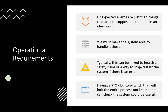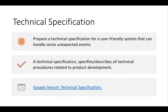Unexpected events are things that are not supposed to happen in an ideal world, but we must make the system able to handle them. Typically this can be linked to health and safety issues or a way to stop or restart the system if there is an error. For example, if there's a power failure it should come back on by itself — microcontrollers are great for this because you can embed the program on them. For health and safety, if someone's hand gets stuck, a stop button or switch that halts the entire process until someone can check the system would be useful.